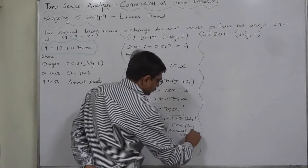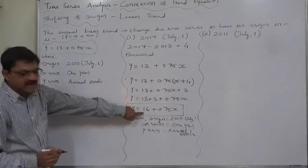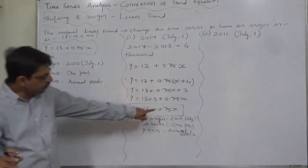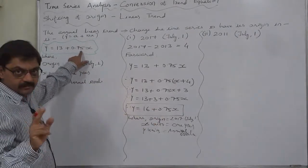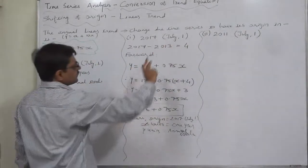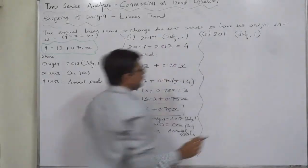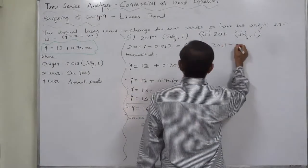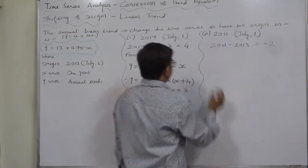The change is in the value of the constant a only. There is no change in the value of the slope of the line b. Now the second point: change the time series to have its origin in 2011 July 1. So first, 2011 minus the origin 2013 equals minus 2, meaning this is a backward shift.